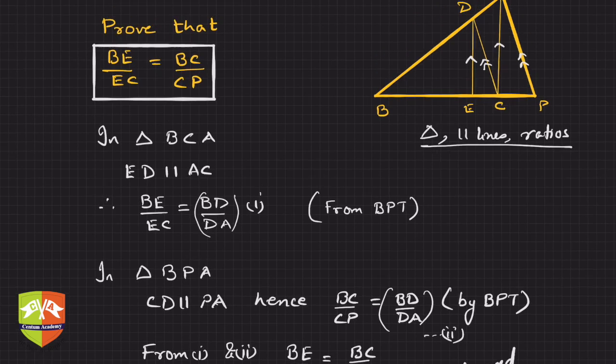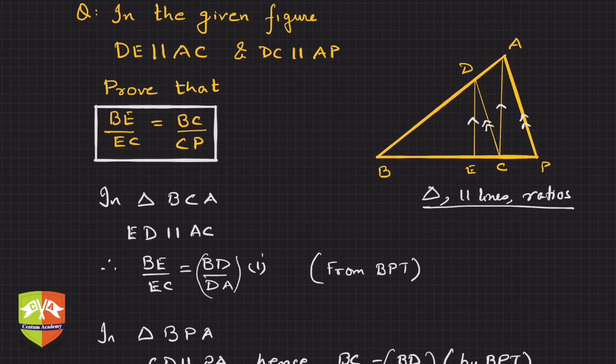Okay, so again, the thought process was you saw a triangle, there are parallel lines, and they are talking about ratios. So the first thing which you should definitely explore is application of Basic Proportionality Theorem.